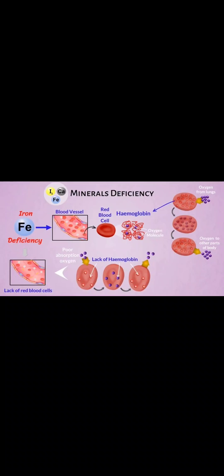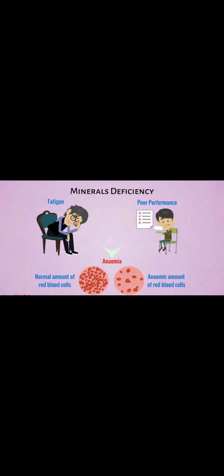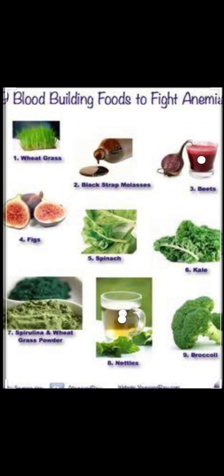The deficiency of iron results in the lack of hemoglobin and therefore a lack of red blood cells, causing poor absorption of oxygen which leads to fatigue, tiredness, and poor performance. This also leads to a pale yellow body and weakness. The disease caused due to the lack of iron is called anemia. We should take iron-rich foods like green leafy vegetables, carrot, jaggery, apple, and beetroot.